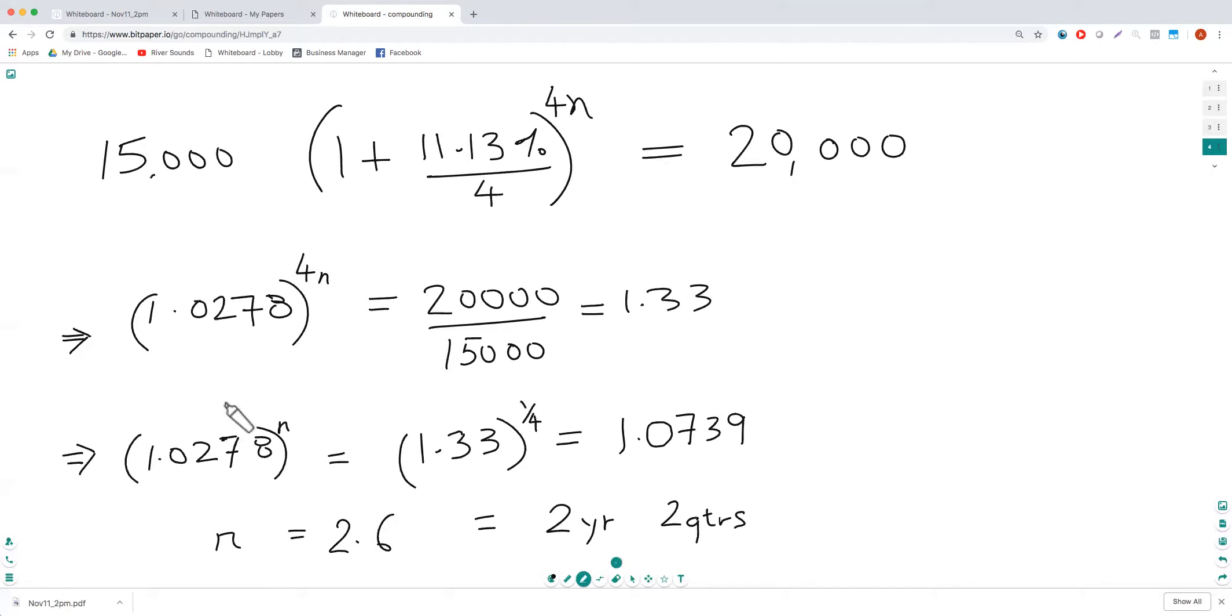And then you want to reduce this 4. You want to remove the 4. So you take the 4th root of 1.33, and you've got 1.0739. And then this formula should be easy.